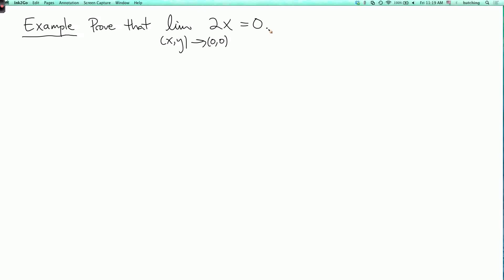Now, this is sort of intuitively obvious, because as x and y are both going to 0, then x in particular is going to 0, and so 2x is going to 0. But intuition's not enough. We need rigorous proof.